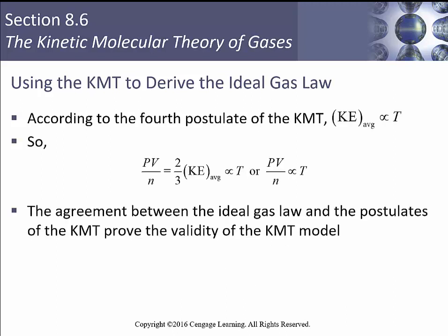According to the fourth postulate of kinetic molecular theory, kinetic energy is proportional to temperature. Molecule speed is related to temperature, so PV divided by the number of moles of gas equals two-thirds of the average kinetic energy, which is proportional to temperature. So PV/N is proportional to temperature — in agreement with the ideal gas law. The postulates of KMT prove the validity of that model.